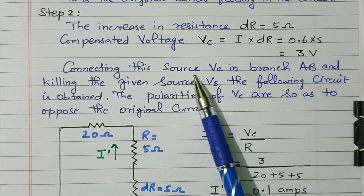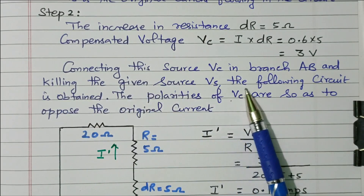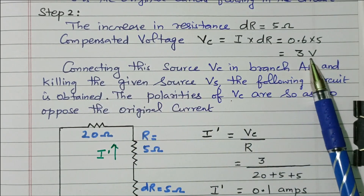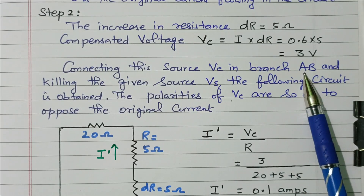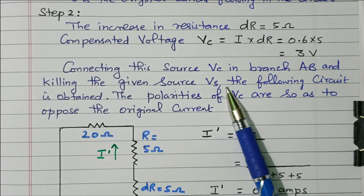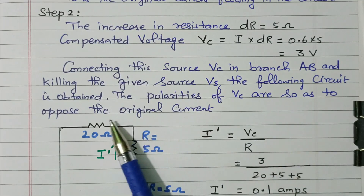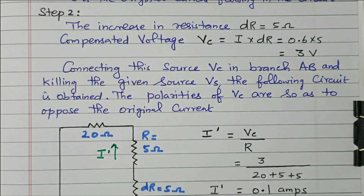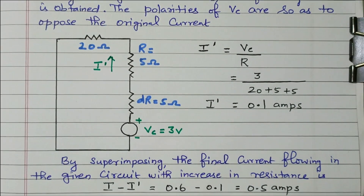Connecting this source Vc in branch AB and killing the given source Vs, the following circuit is obtained. We need to connect this voltage source in series with branch A, then remove the original source — that is called killing the given source, meaning Vs is removed. The polarity of Vc is such as to oppose the original current. That is why it is called a compensating voltage.